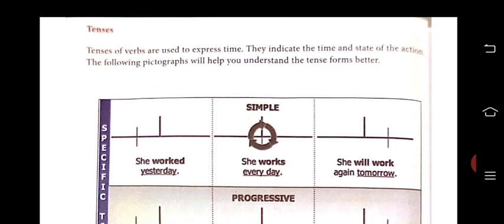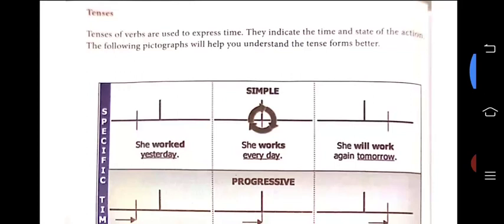So totally we have 12 tenses. So how we can divide the tenses? We can divide the tenses into present, past and then future. And we can subdivide the tenses into 4 parts — that is simple, continuous, perfect, perfect continuous. So totally 4 into 3, 12 tenses we have.